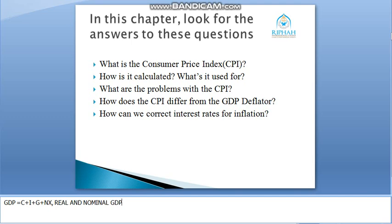Nominal GDP is the production of goods and services valued at current prices. GDP deflator — if you remember — we studied the definition and formula. GDP deflator is equal to nominal GDP divided by real GDP. This is the formula for GDP deflator that we studied.